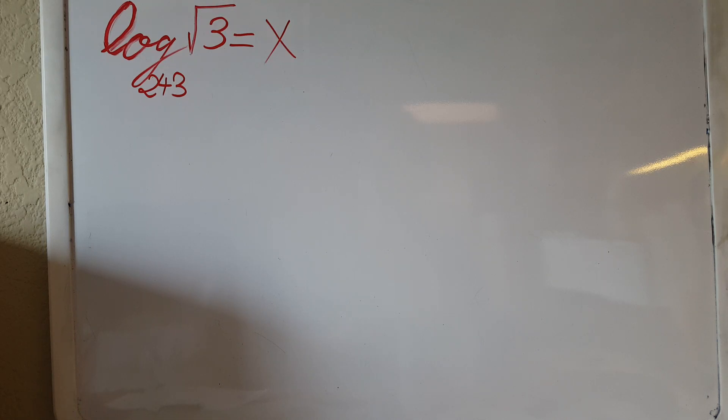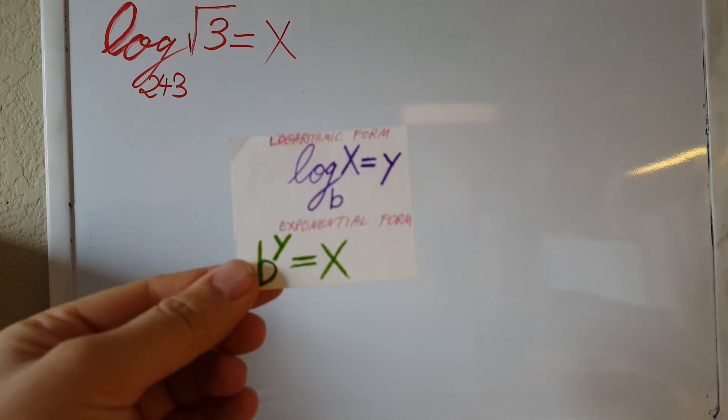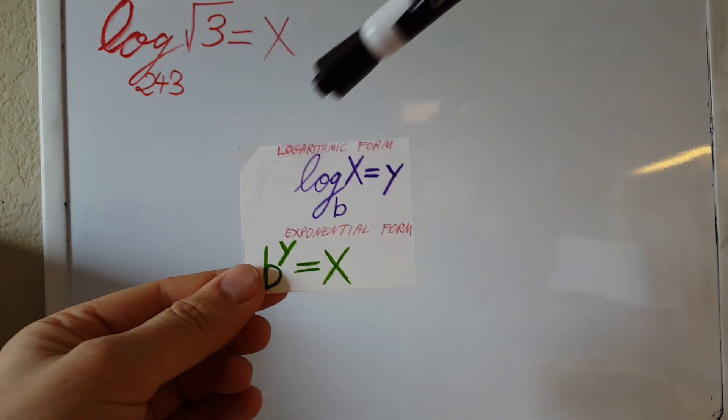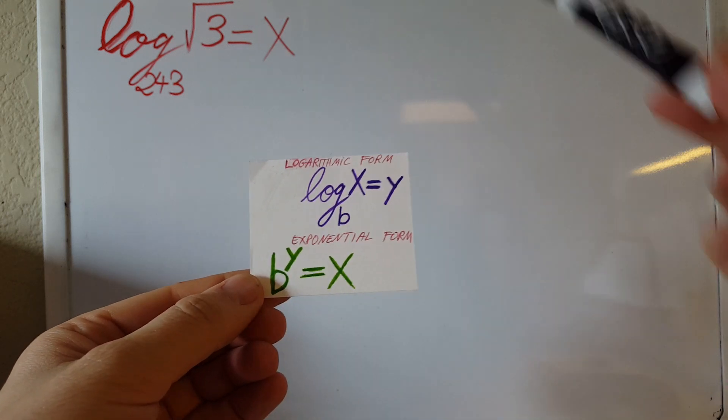In this problem, we're going to calculate log base 243 of square root 3. For this one, we're going to rely on this formula where we convert from logarithmic form to exponential form.